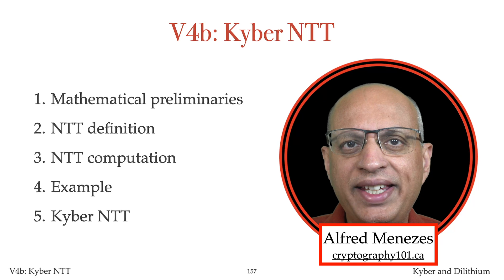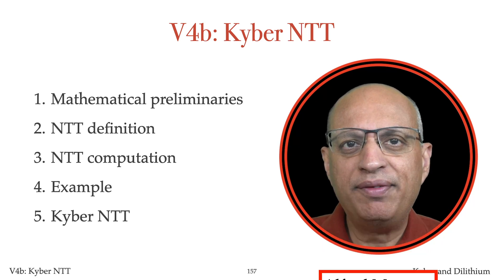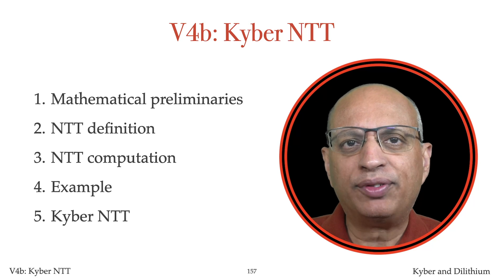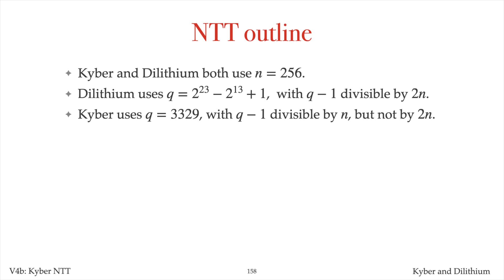I'll present the NTT variant used in Kyber. This NTT variant is only slightly different from the one used in Dilithium. The number theoretic transform used in Kyber is slightly different from the one used in Dilithium. The reason for the difference is the following: both Kyber and Dilithium use the parameter n equals 256, and the Dilithium prime q has the property that q minus 1 is divisible by 2 times n.